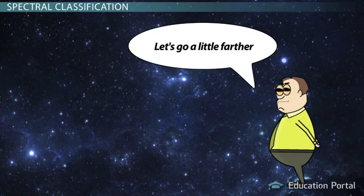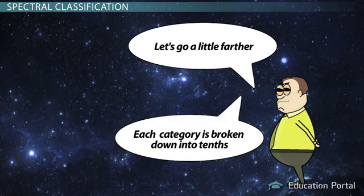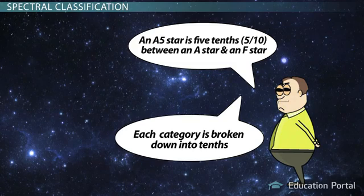These categories of stars can also be broken down into tenths by giving them a number of zero to nine. So an A5 star is five tenths between an A star and an F star.